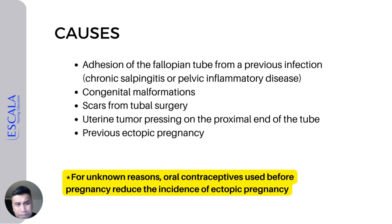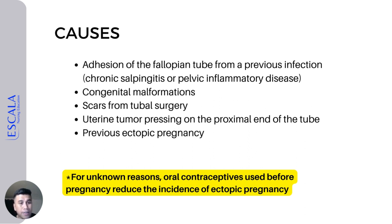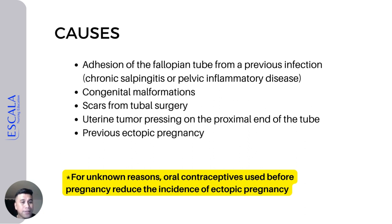What are the causes of ectopic pregnancy? First, adhesion of the fallopian tube from a previous infection, like chronic salpingitis — inflammation of the fallopian tube — which actually leads to pelvic inflammatory disease or PID. This is actually the most common cause. Another cause is congenital malformations. Scarring can also lead to ectopic pregnancy, caused by tubal surgeries or salpingitis.